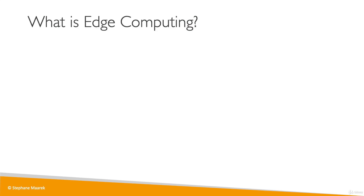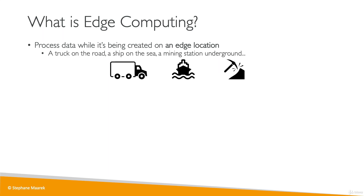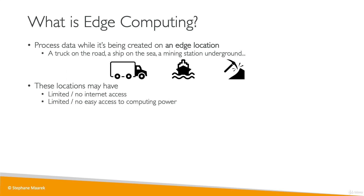The second use case for the Snow family is Edge Computing. Edge Computing is when you process data while it's being created at an edge location — anywhere that doesn't have internet or is far away from a cloud, such as a truck on the road, a ship at sea, or a mining station underground. These locations can produce data but may not have internet connectivity — they may have limited connectivity, no internet access, or no access to computing power. You may still want to run computation and data processing at these locations.